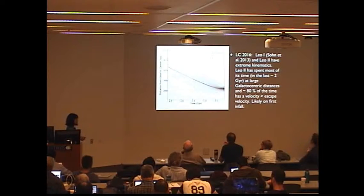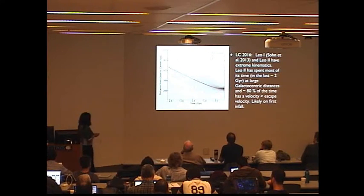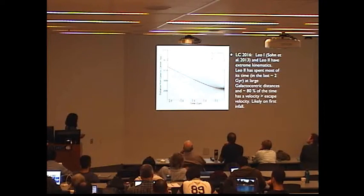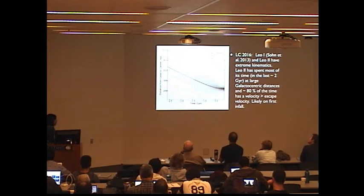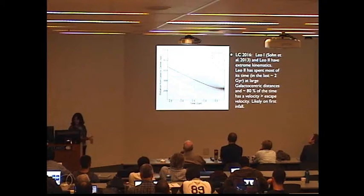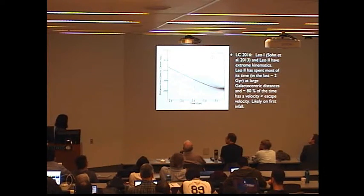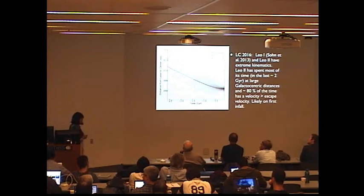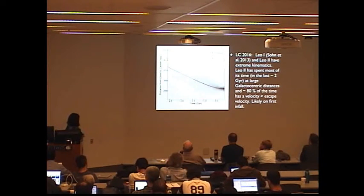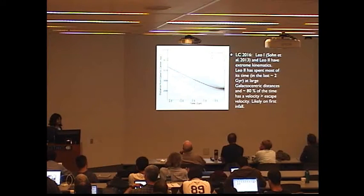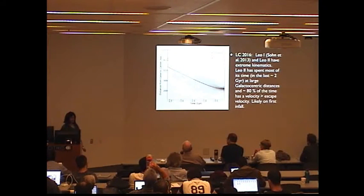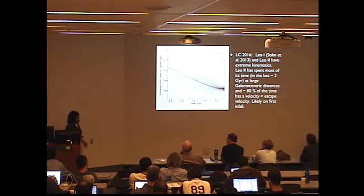So you can, given the HST proper motions, the 3D positions and velocities, which will give you the initial conditions at present day, you can integrate the orbits backward in time. This is now shown for LEO-2. And you see that for the mean of the HST proper motions that LEO-2 has spent most of its time in the last couple of gigayears at large galactocentric distances. And this is also the case if you were to use the one sigma range as well as the three sigma range of the proper motions. If you sample the velocities, you'll see that about 80% of the time it has a velocity that's greater than the escape velocity. So very likely LEO-2 is on its first infall. So the properties that are shared by LEO-1 that others have argued should exclude it from the vast polar structure analysis are likely shared by LEO-2.